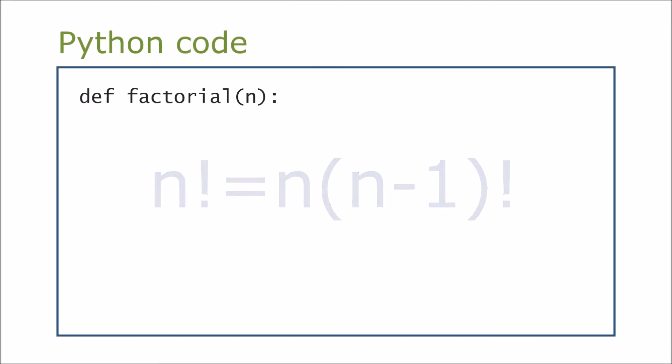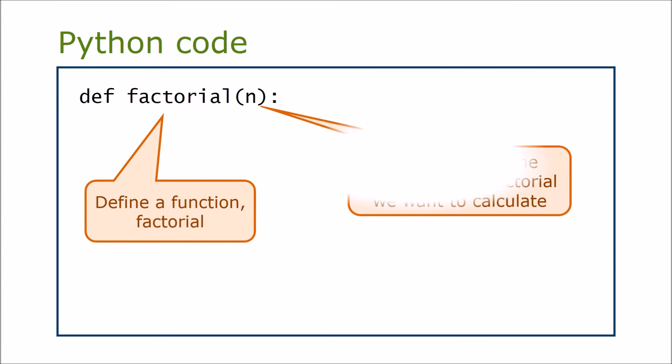We can use this fact to create a factorial function using recursion. In this example we will use Python code. We declare a function called factorial. It takes the parameter n, which is the number of the factorial we want to calculate.